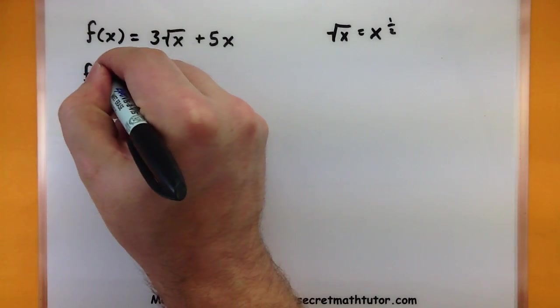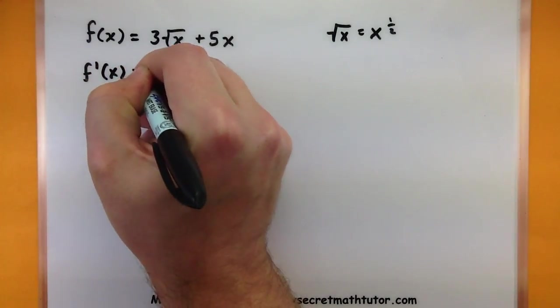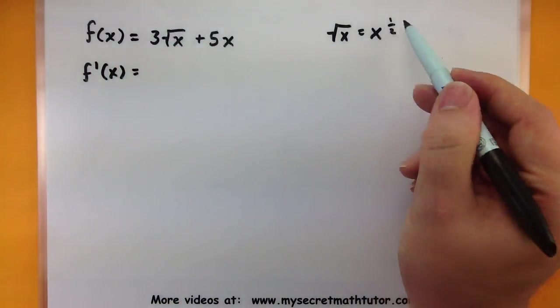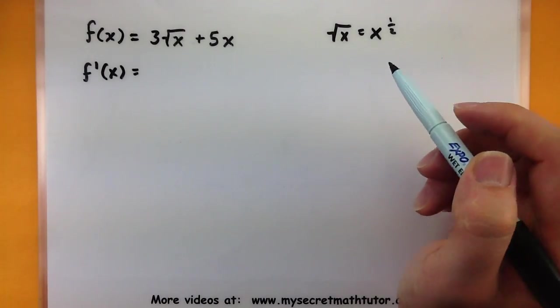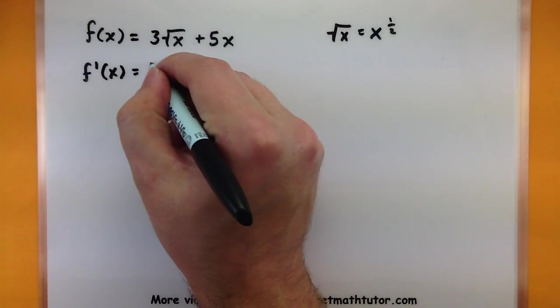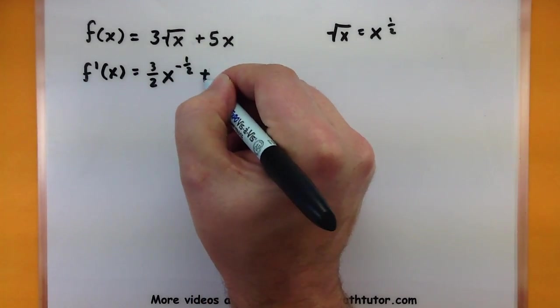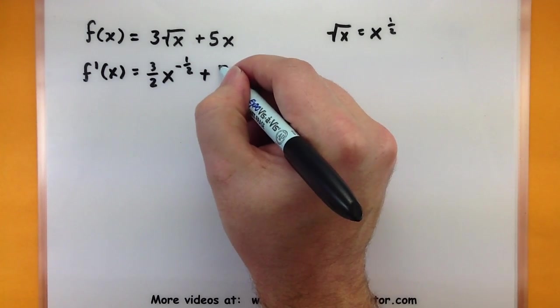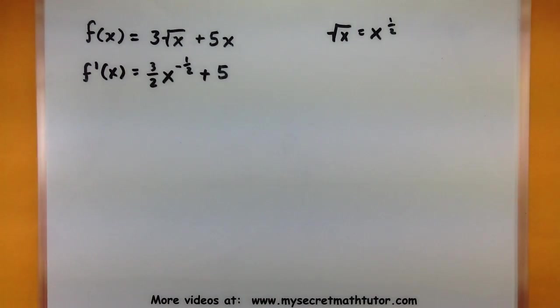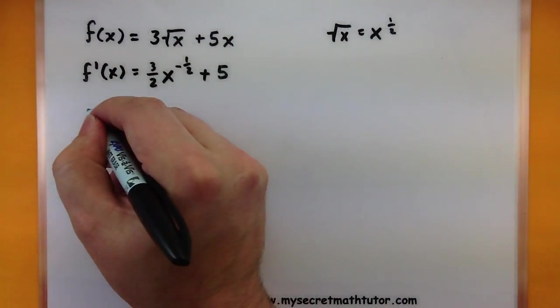So doing my first derivative. I was thinking of bringing down this power so the 1 half would multiply by the 3. Now to get 3 halves x to the negative 1 half plus the derivative of 5x would be 5. Not too bad.